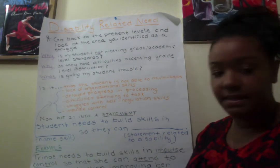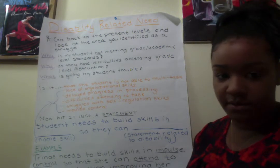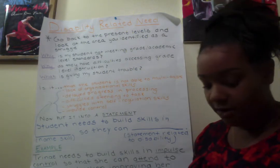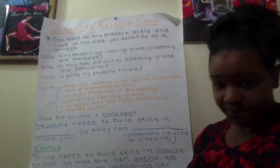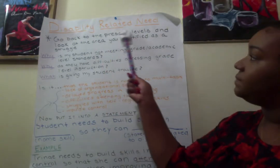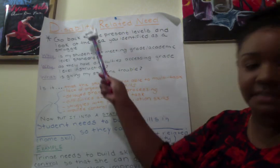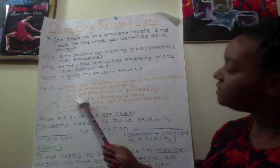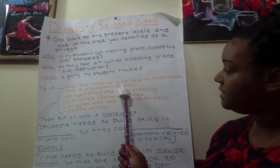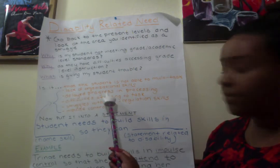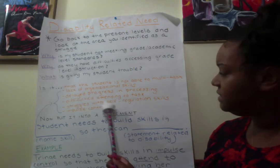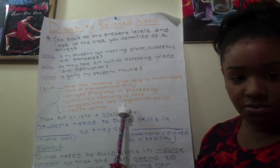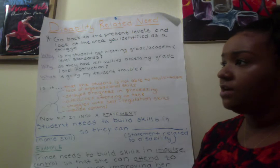We identify that Trinae struggles with fluency and answering WH questions. Why is that? Why can't she function at grade level in this area? How is the disability manifesting? Is it that the student is not able to multitask? Is it a lack of organizational skills? Is it delayed processing of information? Is it difficulties attending to task? Is it struggles with self-regulation skills? Is it impulse control? There are a plethora of things.